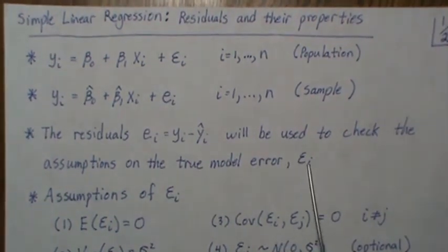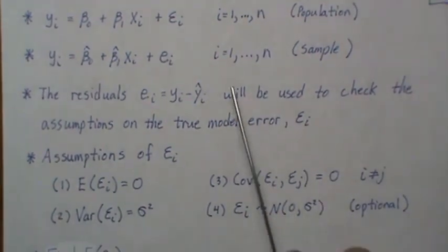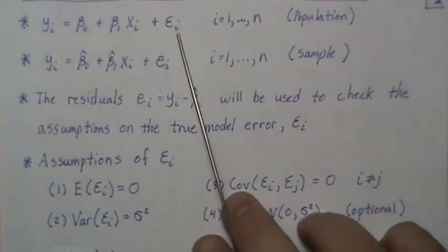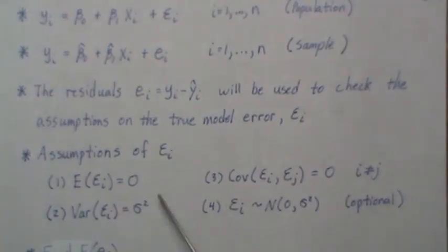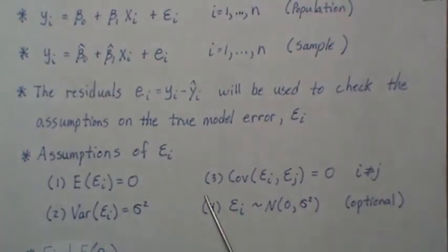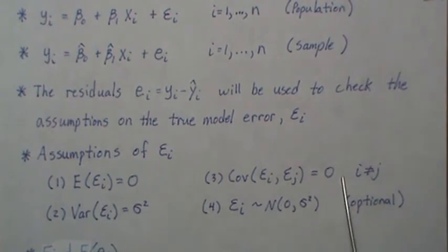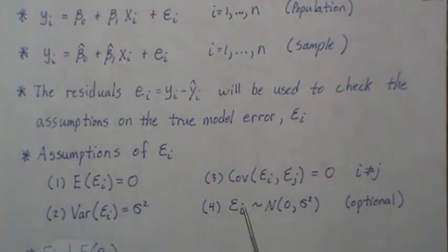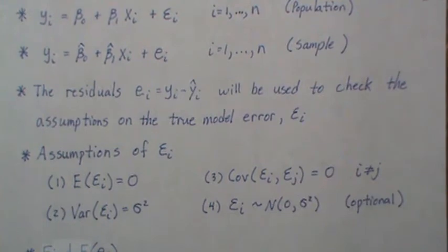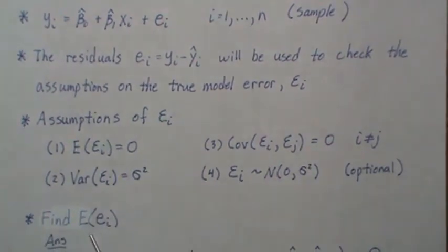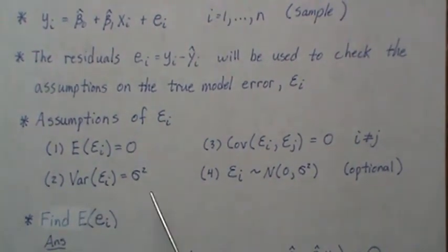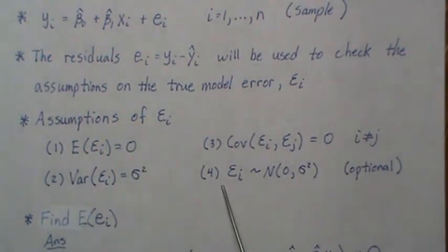As a reminder, here are the four assumptions: mean is zero, constant variance, covariance is zero, and the fourth optional assumption is that the error terms are normally distributed. Now let's see if the residuals possess these properties.